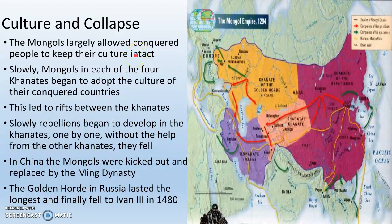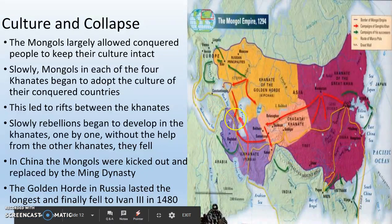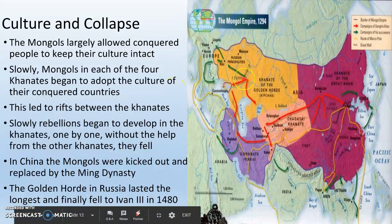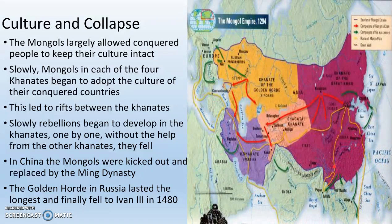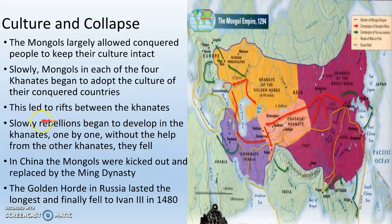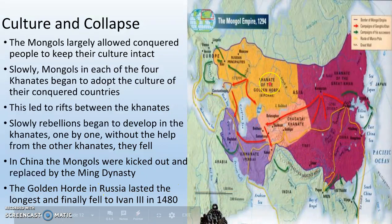What led to the end of the Mongol Empire? The Mongols largely allowed conquered people to keep their culture intact — Orthodox Christians in Russia, Buddhists and Confucians in China, Muslims in the Middle East. Slowly, the Mongols in each khanate began adopting the culture of their conquered country. This led to rifts between the Mongols and the different khanates, and rebellions began to develop one by one. Without help from the other khanates, each one fell. In China, the Mongols were kicked out and replaced by the Ming Dynasty. The Golden Horde in Russia lasted the longest, finally falling to Ivan III in 1480.